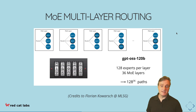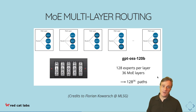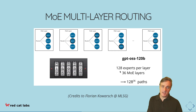What does this look like across layers? In a network with several different layers, at each layer you might choose a different expert. Given that we can choose a different expert at each layer, we can calculate how many possible paths there are through the network. For the GPT open source model, which has 128 experts per layer and 36 mixture of experts layers, there is an incredible number of potential paths that a representation can take through the network.